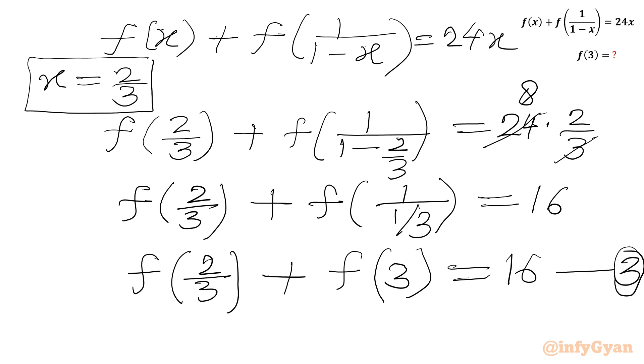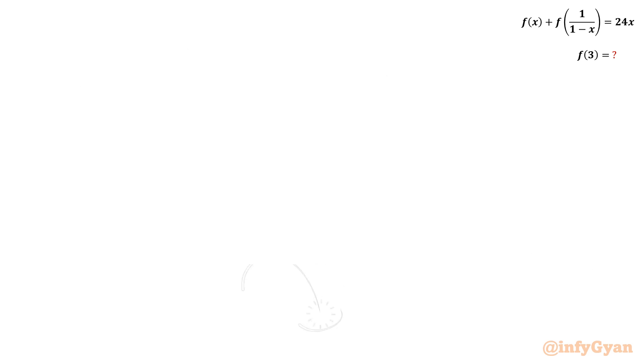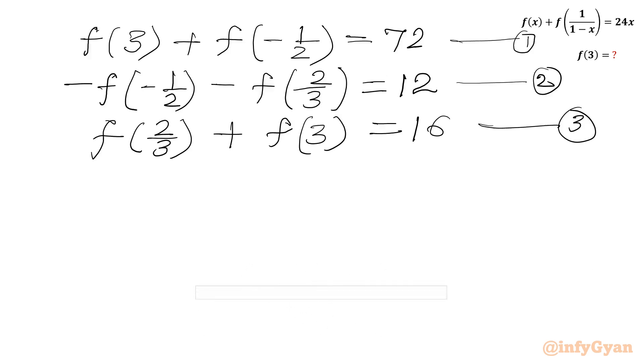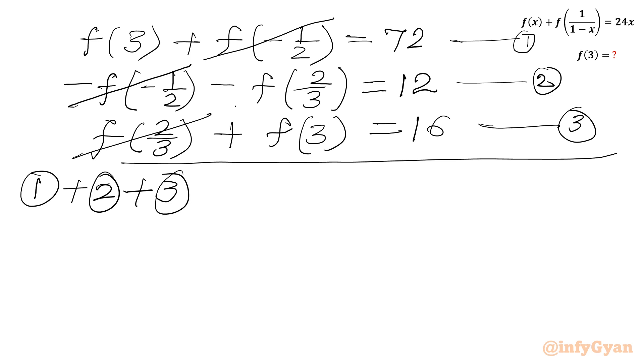Now I will add all the 3 equations. Let me write all the 3 equations here. So equation 1, 2, 3. If I will simply add. So let me write here, 1 plus 2 plus 3. Now you can see f(-1/2). This will be over with minus of f(-1/2). And f(2/3) will be cancelled with minus f(2/3). So we will get f(3) + f(3) in the LHS.